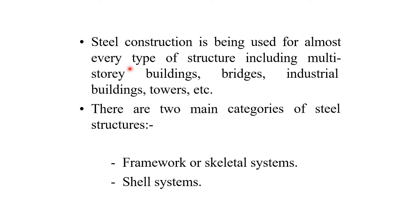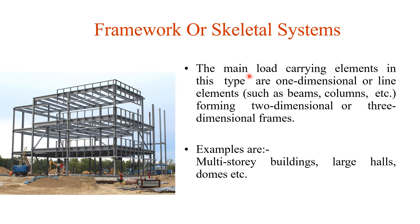Steel construction is used for almost every type of structure including multi-story buildings, bridges, industrial buildings, towers, and petrol pumps. There are two main categories of steel structures: the framework or skeletal system, and the shell system. In the framework or skeletal system, the main load-carrying elements are one-dimensional or line elements such as beams and columns, forming two-dimensional or three-dimensional frames. Examples include multi-story buildings, large halls such as marriage halls, student gathering halls, and dormitories.